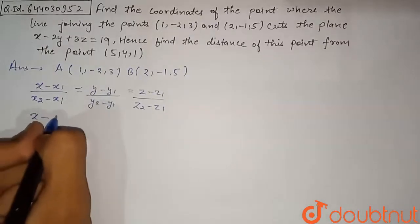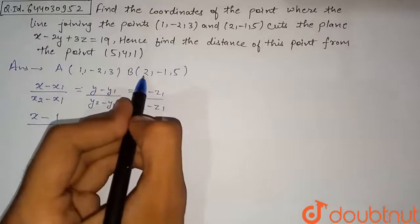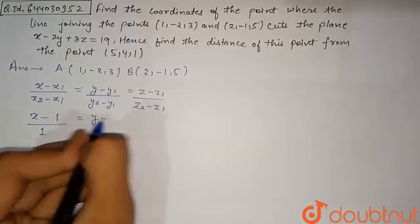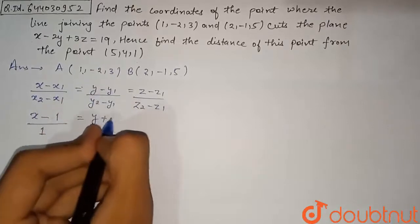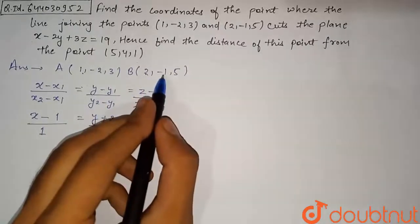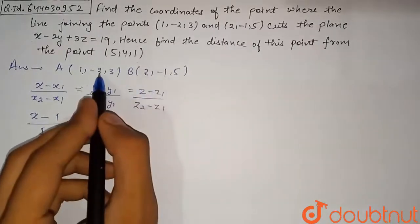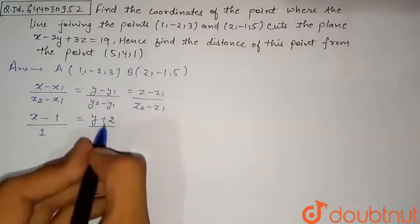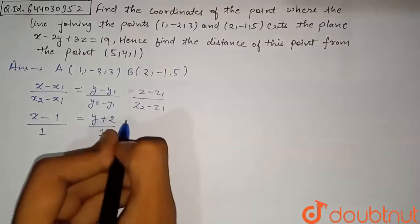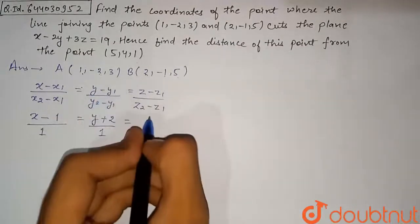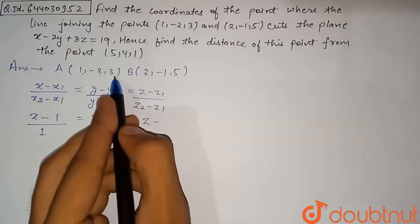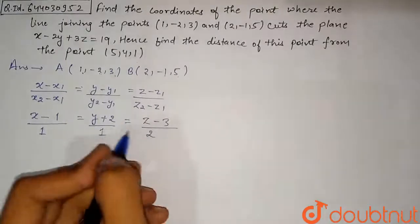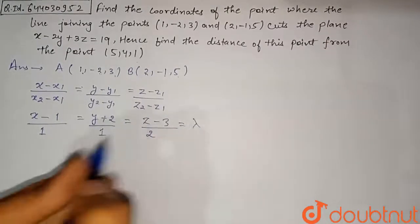Substituting the values: (x - 1)/(2 - 1) = (y + 2)/(-1 - (-2)) = (z - 3)/(5 - 3), which simplifies to (x - 1)/1 = (y + 2)/1 = (z - 3)/2. This is our straight line equation.